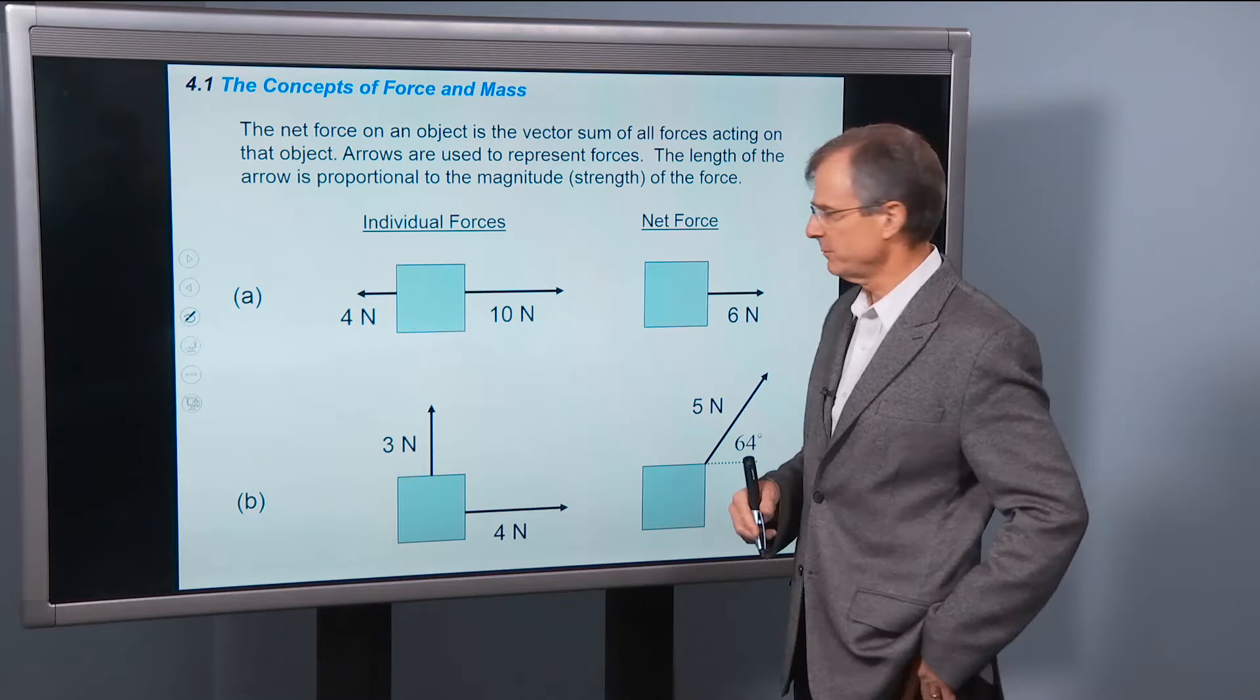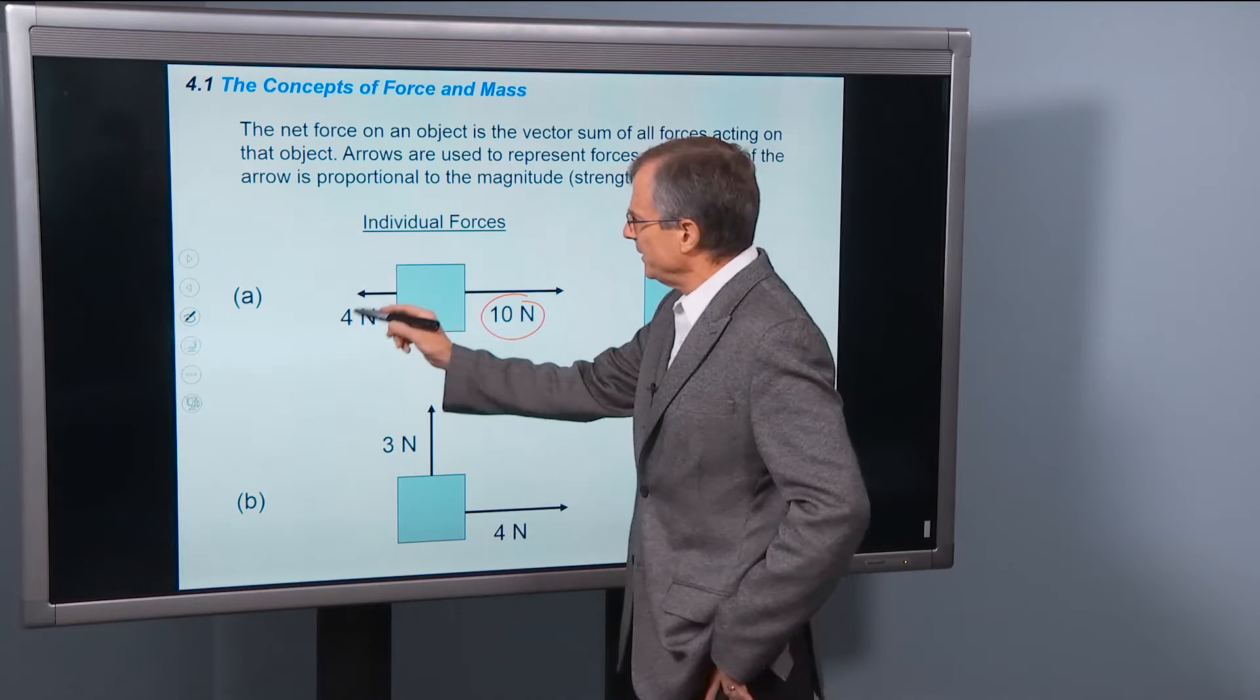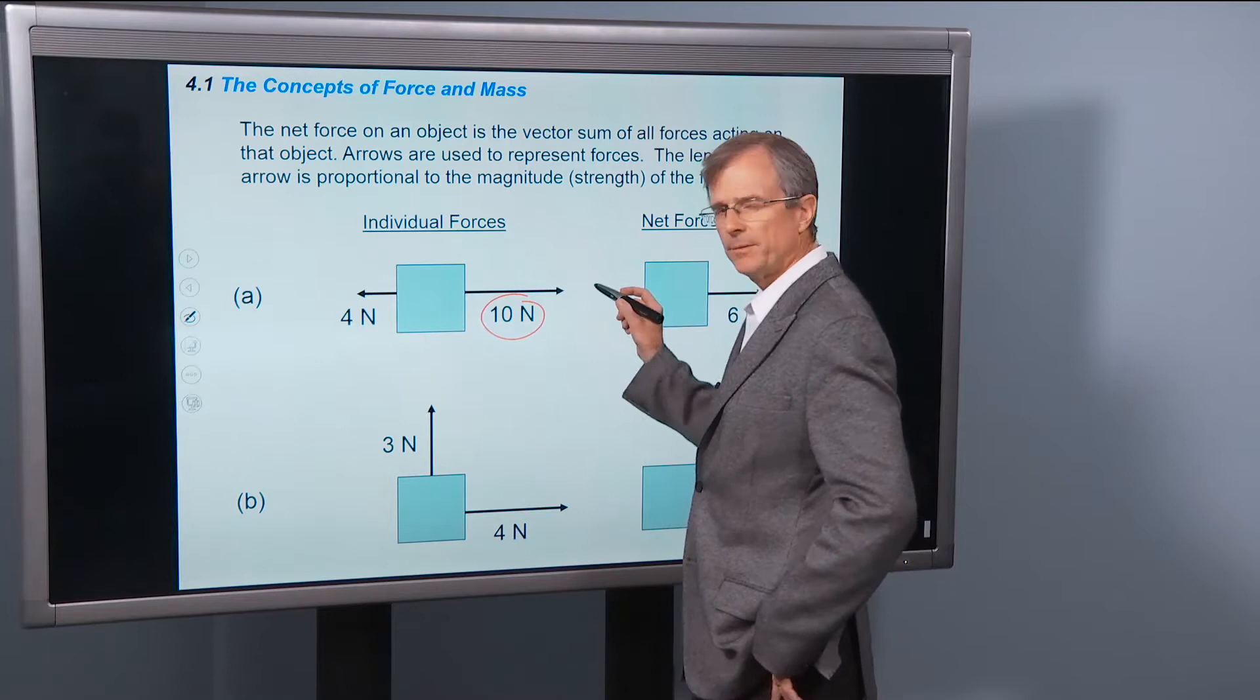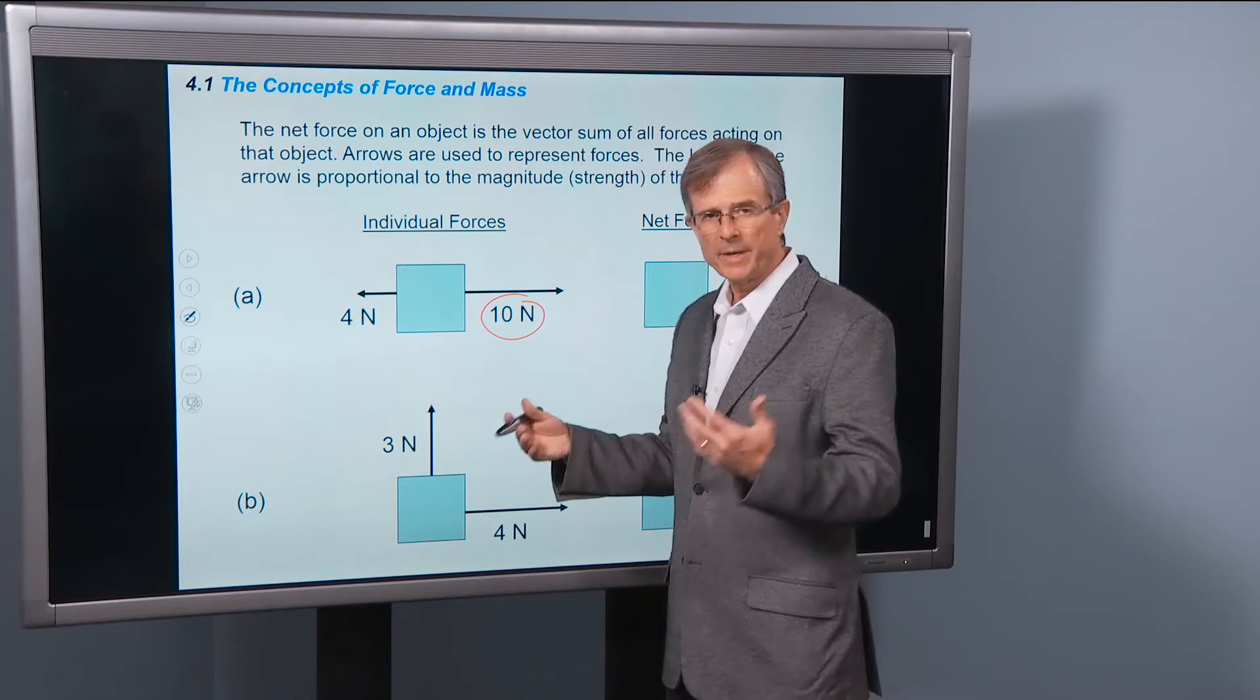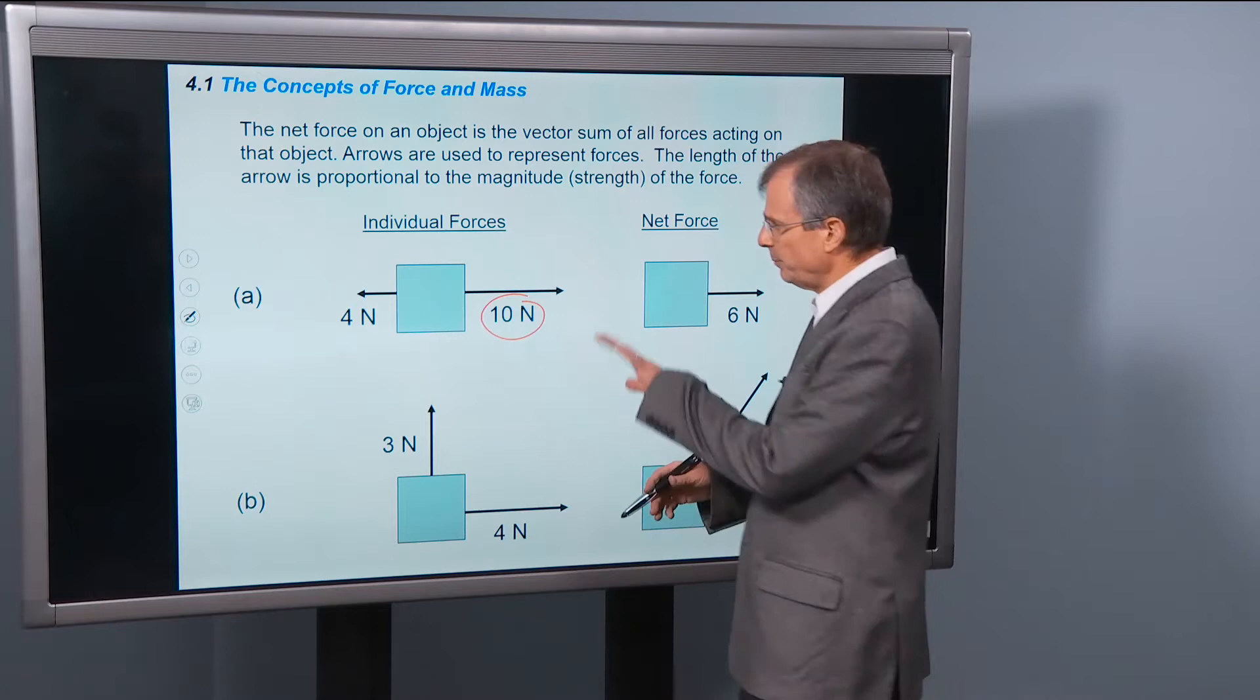So if this is a 10N force that's acting on this box toward the right, and this 4N force is acting on the box toward the left, then we try and make the length of the arrow at least approximately proportional to the strength of the force. This one has a magnitude of 10N, this one has 4N, so we draw a shorter vector arrow for that.